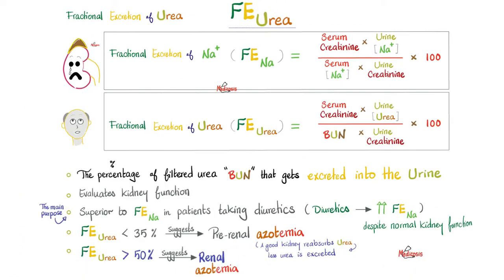How can we overcome this difficulty with the FENA? You do it by ordering the fractional excretion of urea. Basically, ask yourself: out of the urea that was filtered into your kidney, how much got excreted? What was the fraction of the urea excreted? This is the fractional excretion of urea.